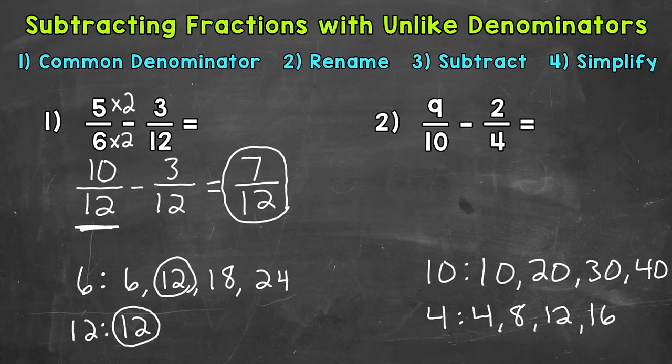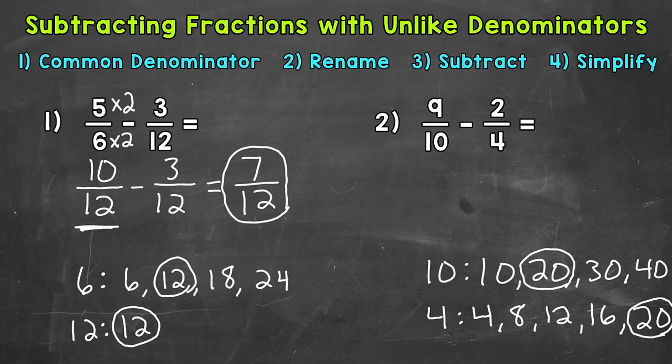The multiples of 10 are already at 40, and the multiples of 4 are only at 16, so let's extend that one. The next multiple of 4 is 20, and that gives us a common multiple — specifically the least common multiple. So we're going to use 20 for our common denominator.